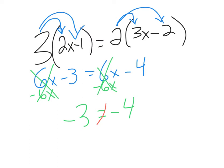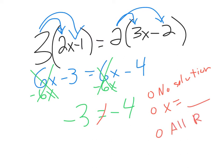Negative 3 equals negative 4 is not a true statement, and there's really no way to solve it any further. This is what's called a contradiction, because one side contradicts the other — negative 4 is not equal to negative 3. On your Alex homework, the question will ask you to either check the box that says no solution, x is equal to a value, or all real numbers. In this case, the answer is no solution.